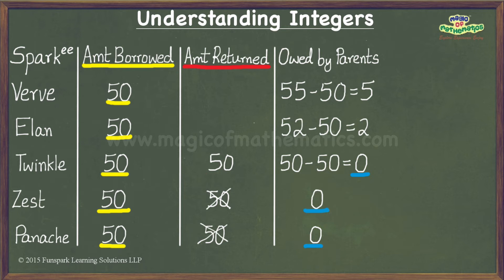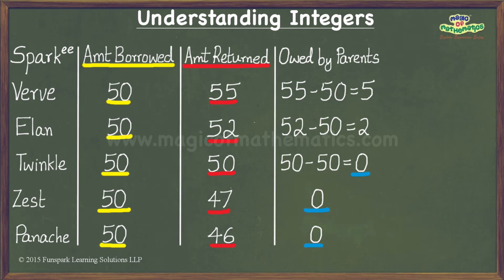To address this issue, let us look at things from the perspective of the parents. Let us revert back to the original entries under the column labeled Amount Returned. The parents want their 50 sparks back, so if there is a shortfall in the amount that their children returned, the children owe them an amount equal to the shortfall. The children may not have this amount readily available, but they owe it to their parents anyway and can probably give it when they receive their pocket money at a later date.